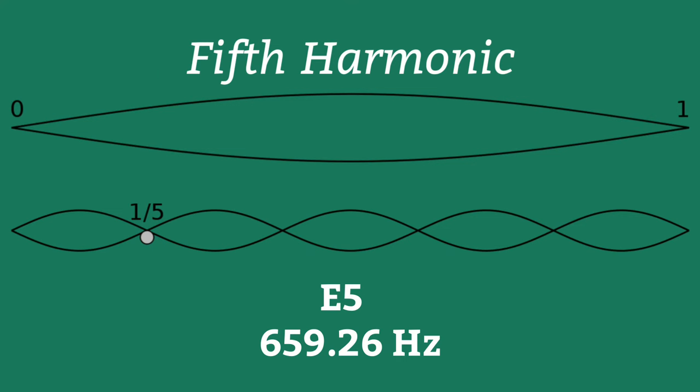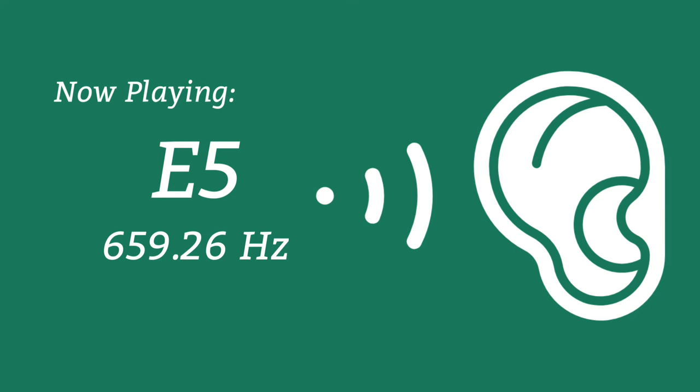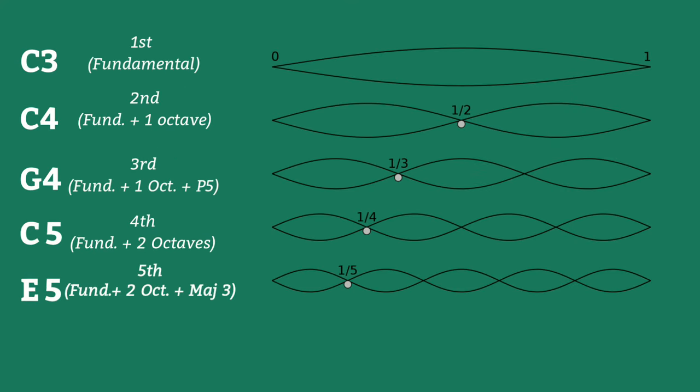The fifth harmonic, you might know where this is going, is five times the frequency of the fundamental, and accounts for one-fifth of the string's length. We hear this as the major third above that second octave, or in this case, E5.